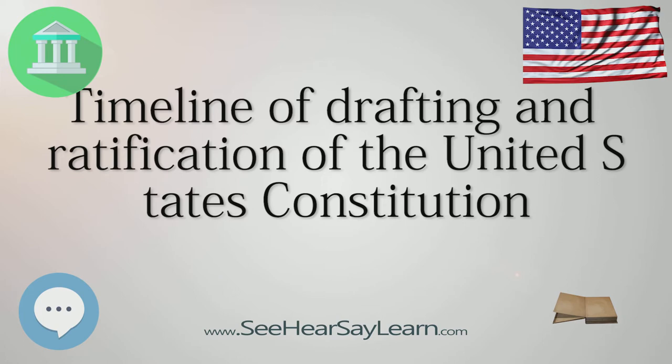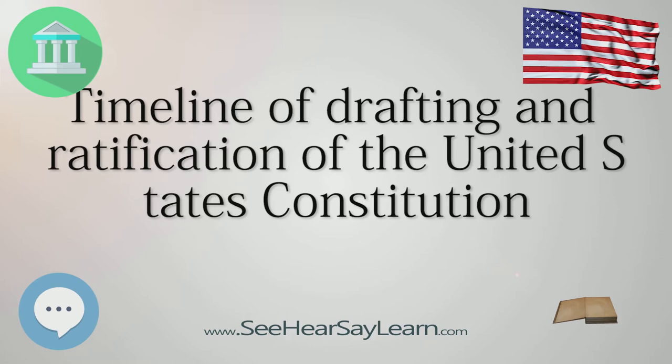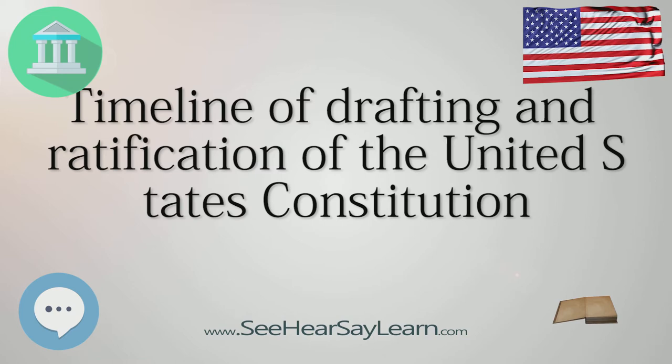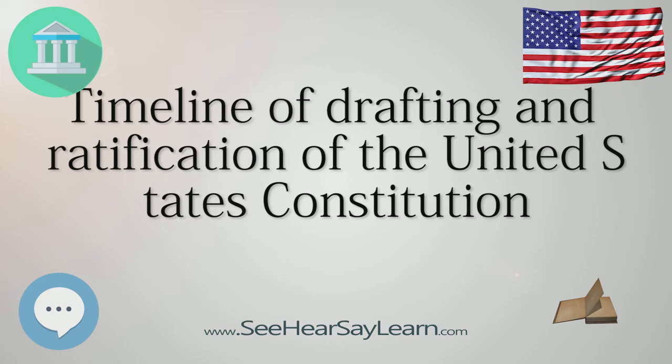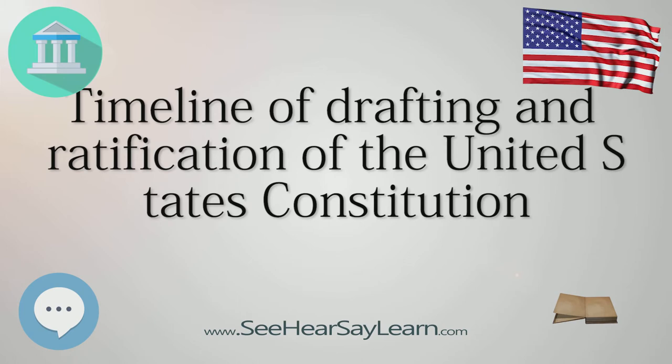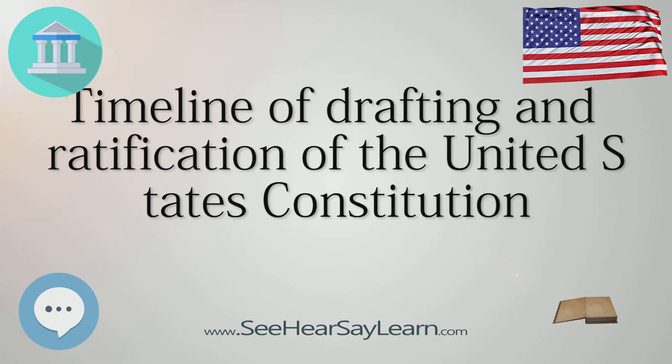April 6: Electoral votes counted. The House and Senate, meeting in joint session, certify that George Washington has been elected President of the United States and John Adams elected as Vice President. April 21: John Adams is sworn in as Vice President of the United States in the Senate chamber at Federal Hall in New York City.